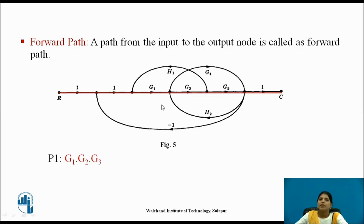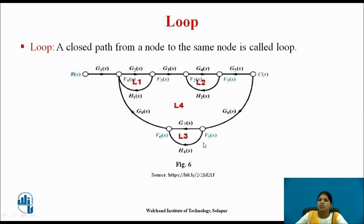So p1 = g1·g2·g3 and p2 = g1·g4. The next terminology is loop. A closed path from a node back to the same node is called a loop. Here there are a total of four loops — a loop starts and ends at the same node, and this first one is l1.